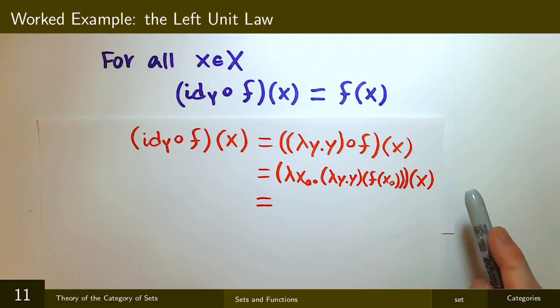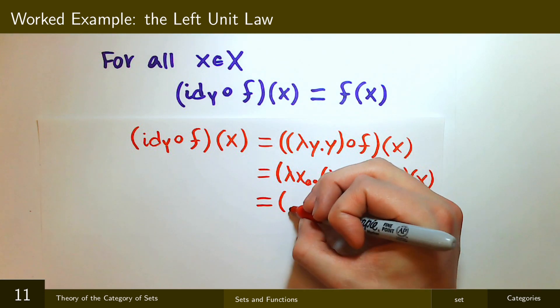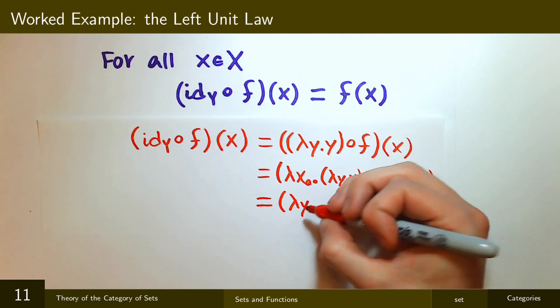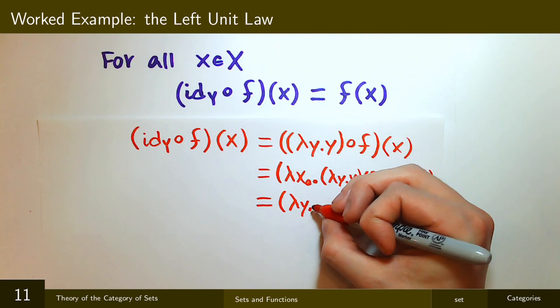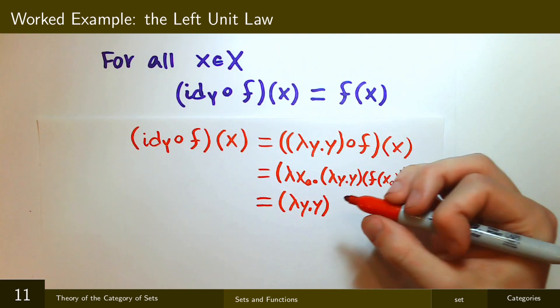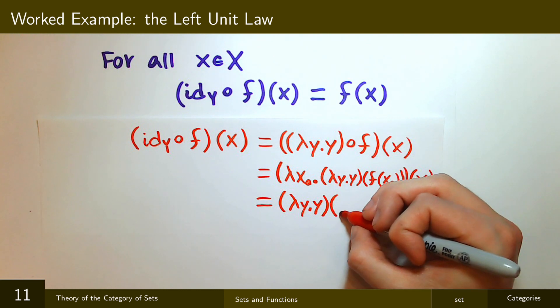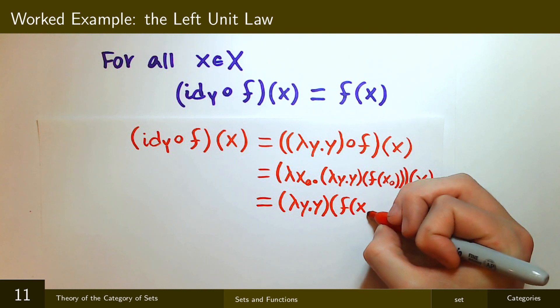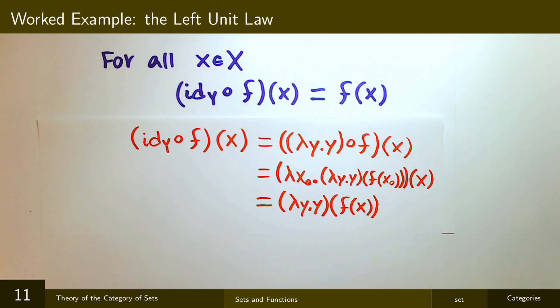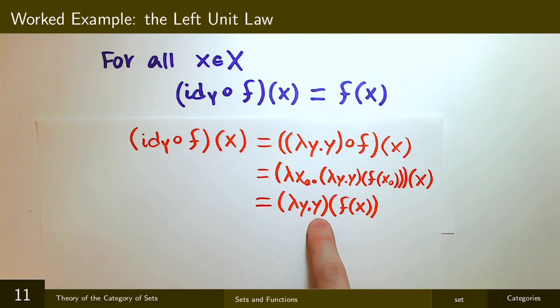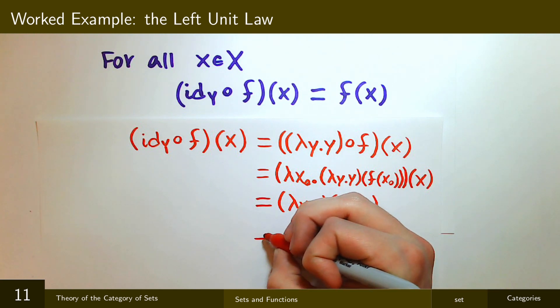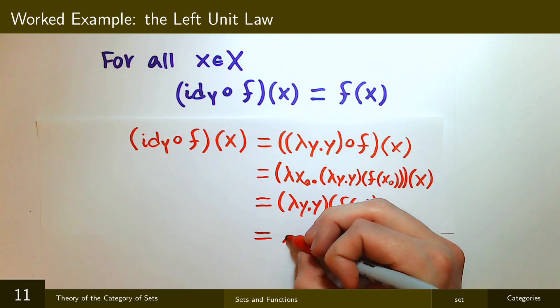So now I plug in x for x naught in this expression. That's how function application works. And so I get lambda y dot y applied to f(x). And then I substitute f(x) in for y in y. And I get f(x).